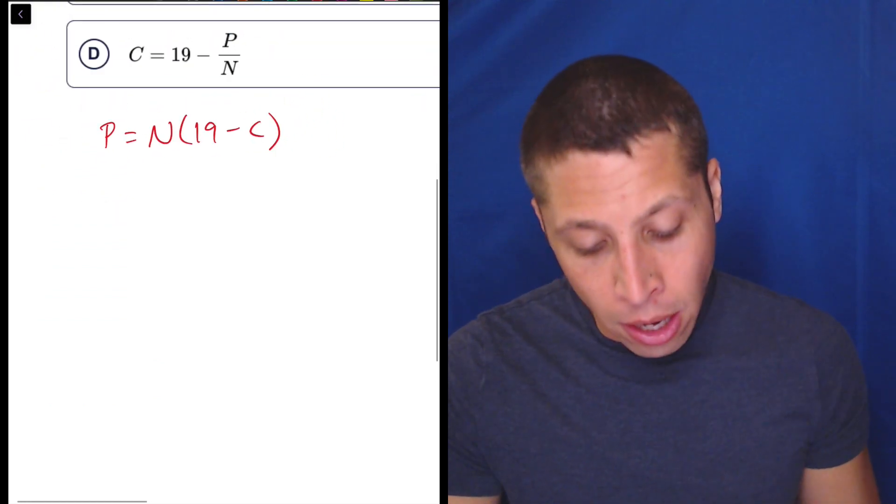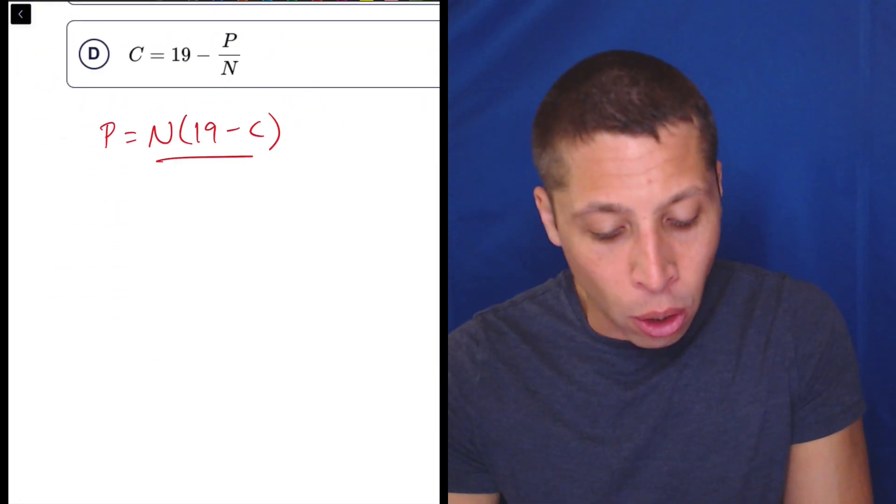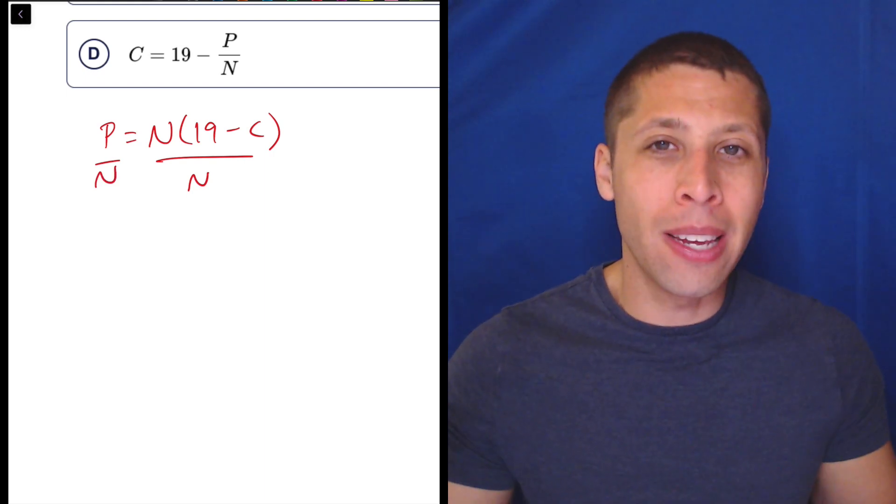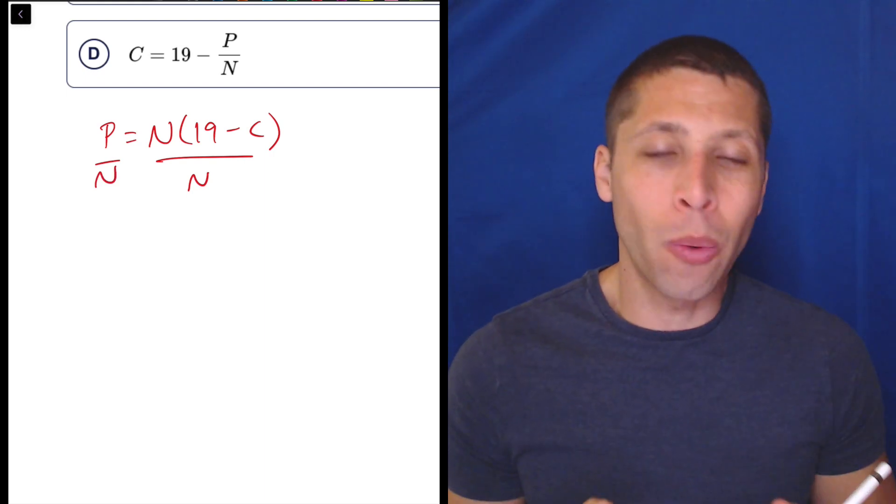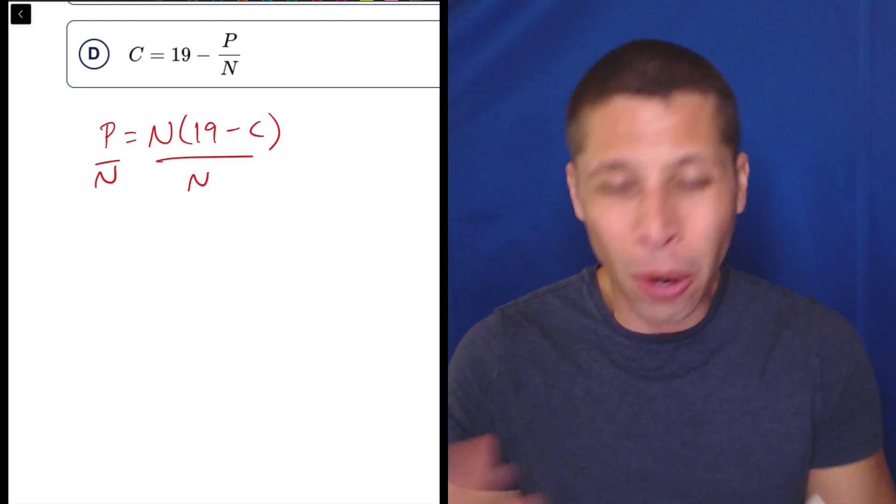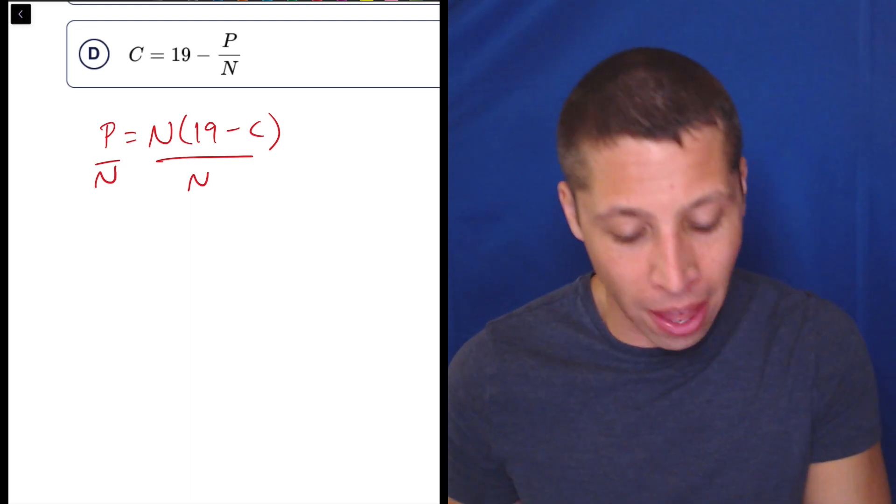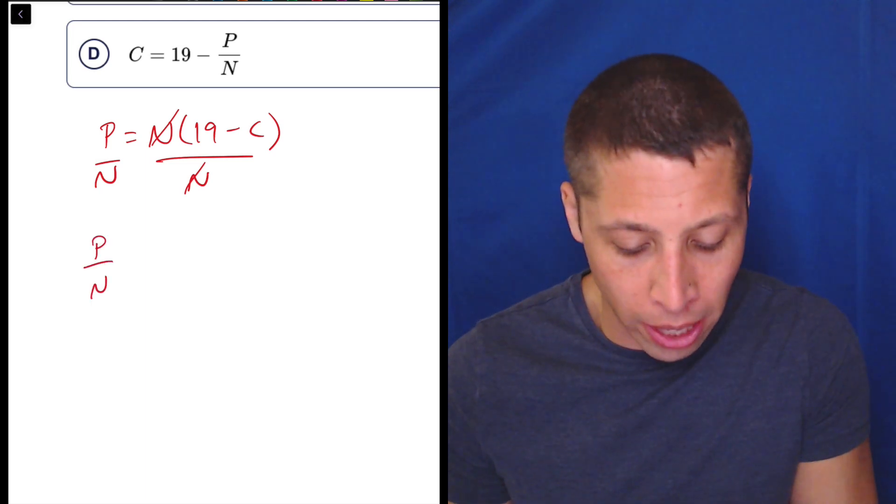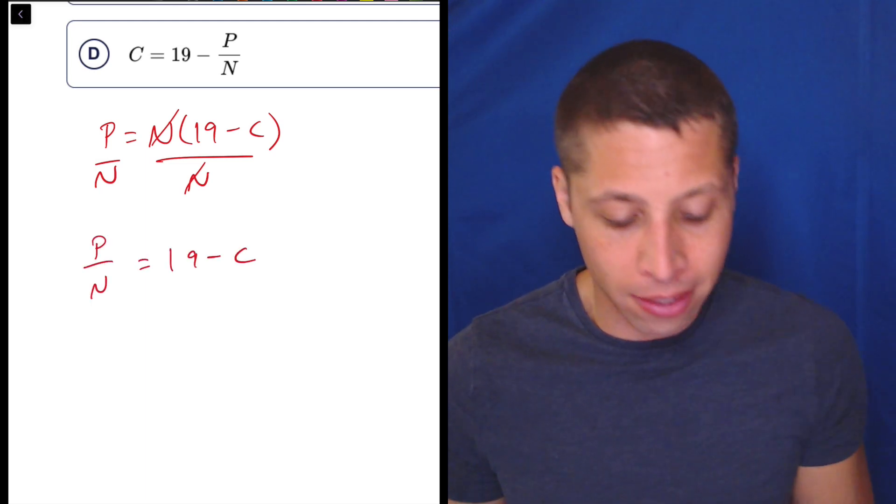Just focusing in on that, what I would do is I would first get the N away. Some of you are going to distribute, but I would say the point is work from the outside in. Strip things away. Don't mix stuff together on the right side there. Get it out if we can. So that leaves us with P over N is equal to 19 minus C.